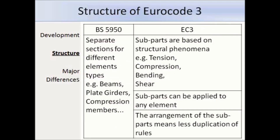The structure of Eurocode 3 is quite different to BS 5950. We have sub-parts, and EN 1993 Part 1 contains several sub-parts based on structural phenomena — so sub-parts are on tension, compression, bending, shear and buckling, etc. Each of these sub-parts can be applied to any element. This is a major change from BS 5950, where you would have had sections for designing different elements such as a beam or compression member. In Eurocodes we don't have those — if we were designing a beam, we would need to look at sub-parts relating to bending, shear and combined bending. The reason Eurocodes are arranged this way is because it means less duplication of design rules and promotes a better understanding of structural behaviour.